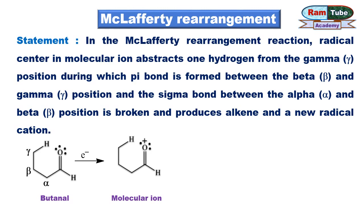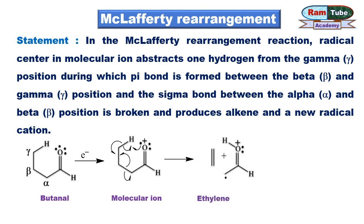In this reaction, the radical cation center removes one hydrogen from the gamma position, during which a pi bond is formed between the original beta and gamma position, and the sigma bond between the alpha and beta position is broken. This produces neutral species as ethylene and one radical cation, which further undergoes resonance to form an enol radical cation, which is detected by the mass detector.